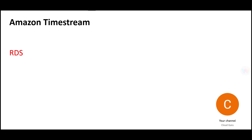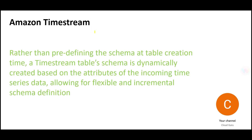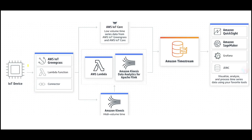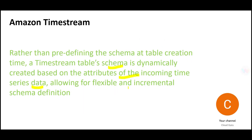If you are using Aurora, RDS, or any relational database, the schema is hard-coded — you first have to define the DDL with a CREATE TABLE statement and so on. In Timestream, the schema is generated dynamically based on the attributes coming in from your time-series data. The schema automatically adapts to whatever datasets are coming through, and it is incremental as well.